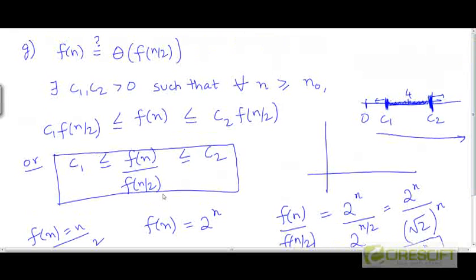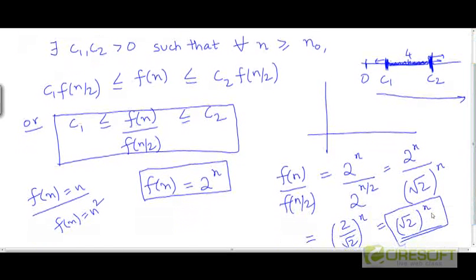For that reason, we claim that if you take an exponential function like this, it is not possible to bound the value of this ratio f(n) to f(n/2) between two fixed constants, because the value of the ratio depends on n. So, as n goes up, the ratio will also go up in an unbounded way.